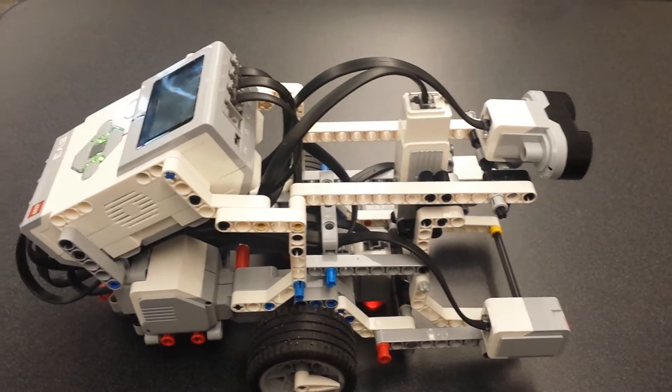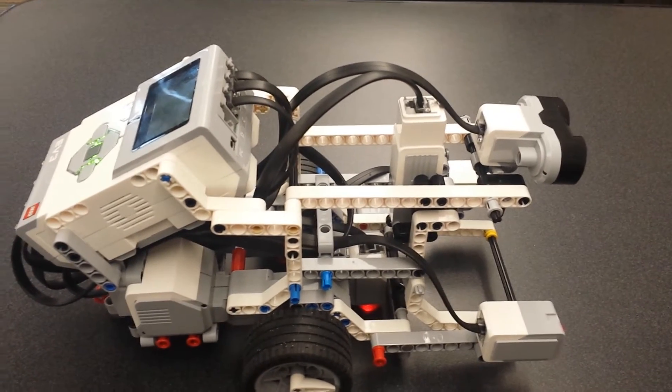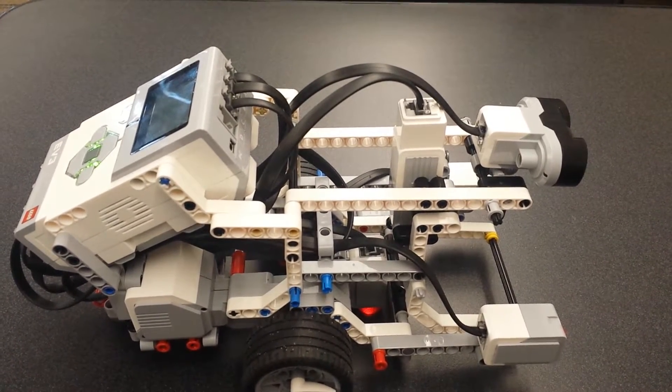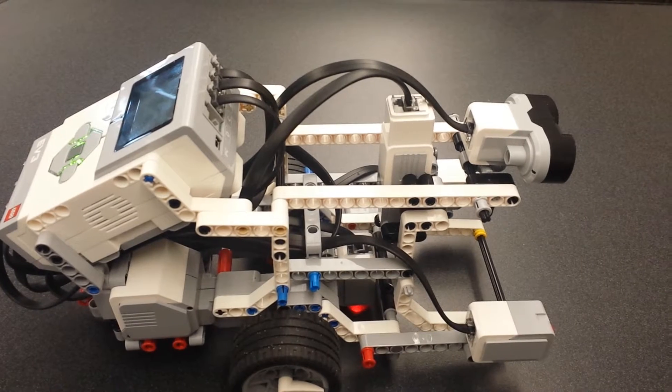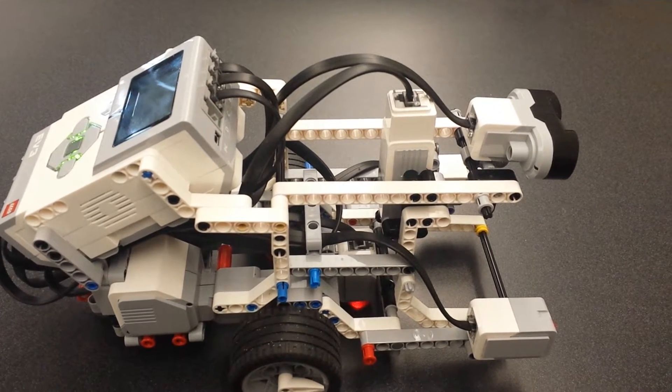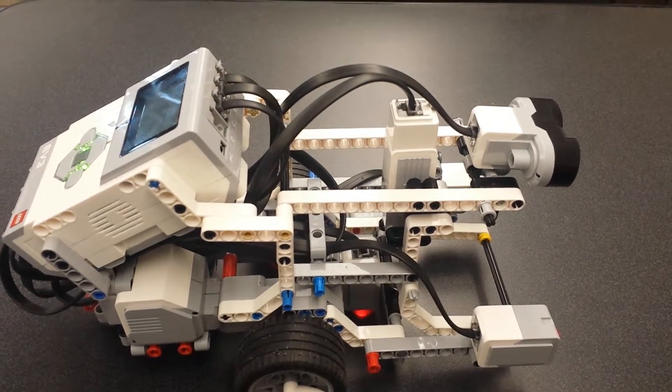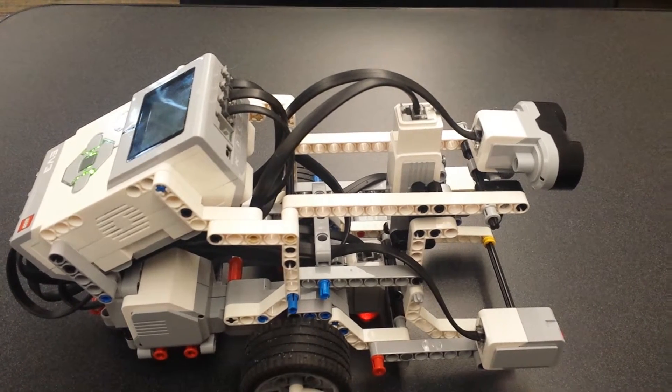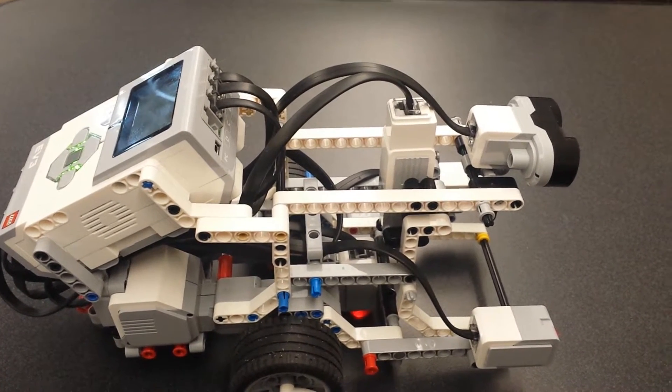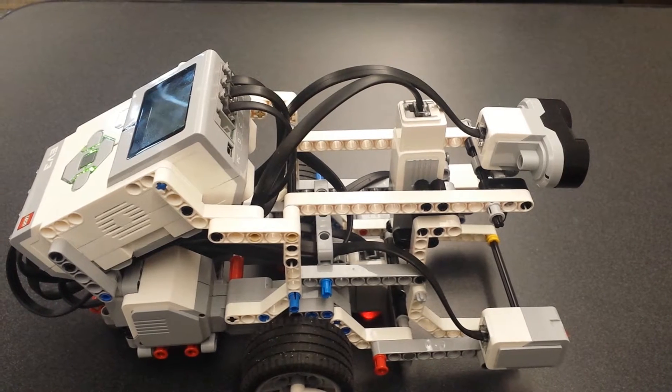The first thing that happens is it needs to sense something within a certain distance of the front of the brick. So you're going to be using the sonar to do that. After that senses something is in its vicinity, it's going to start to growl. So you'll have to activate one of the sound functions.